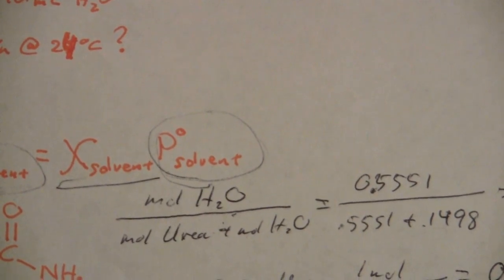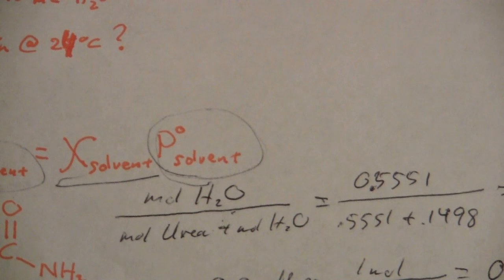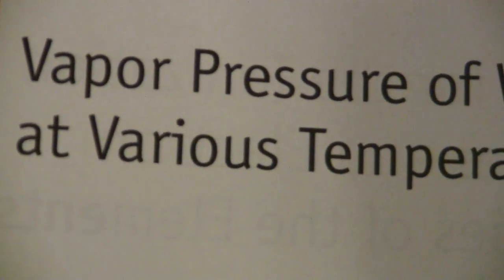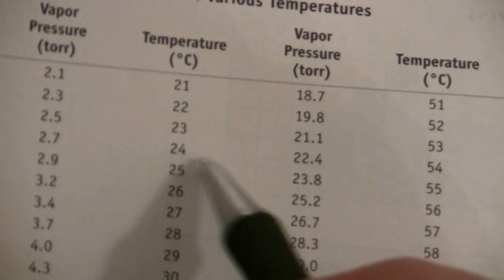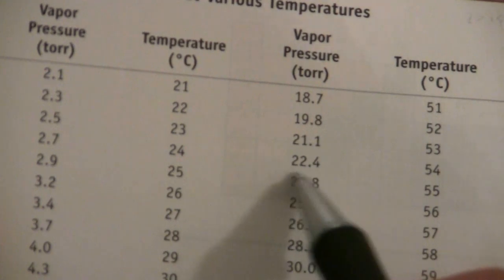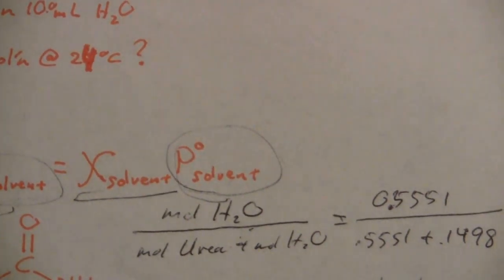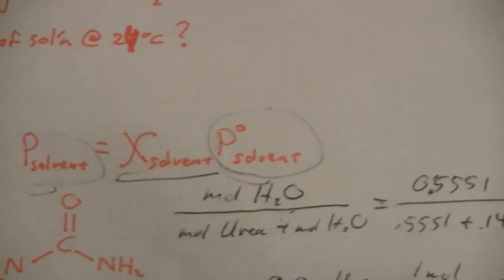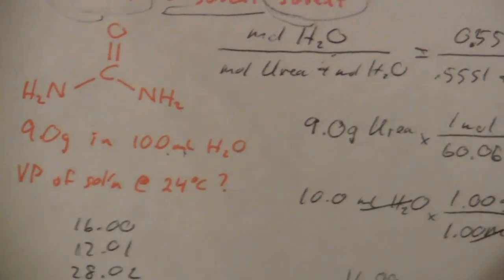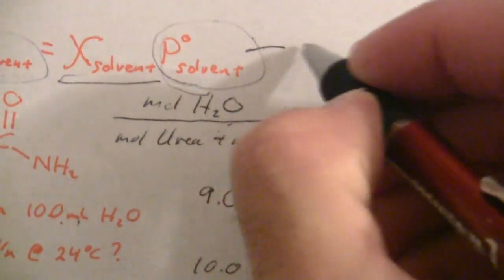In the textbook there is an appendix that has that information for us—the vapor pressure of water at various temperatures. The temperature we're interested in is 24 degrees, and so we're looking at this value for the vapor pressure, which is 22.4 torr.